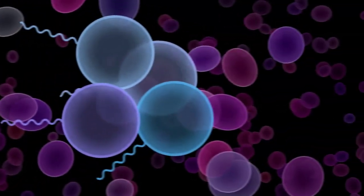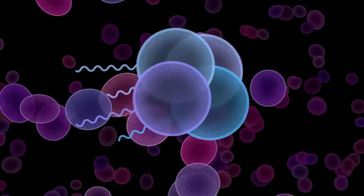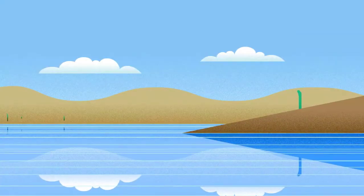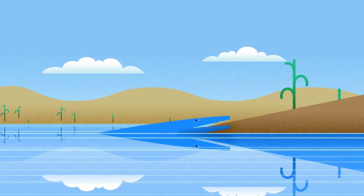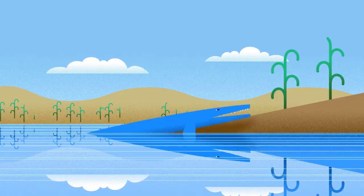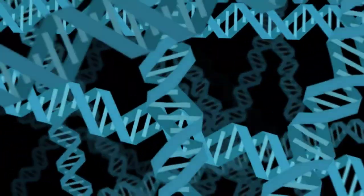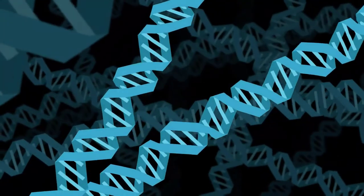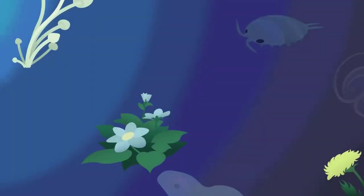Single cells joined together and took on specialized functions, giving rise to multicellular life. Plants and animals moved to land, where they had access to new resources. The duplication and divergence of genes, chromosomes, and even whole genomes have allowed organisms to evolve new structures and functions.